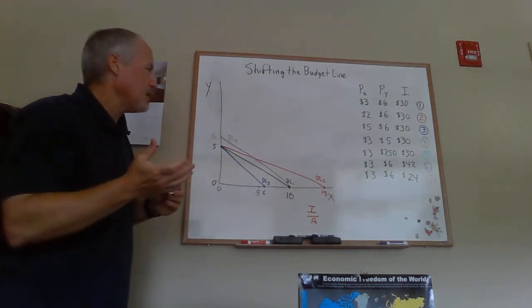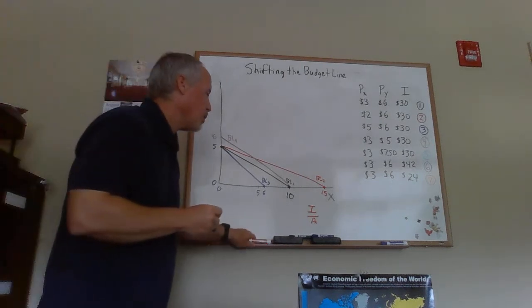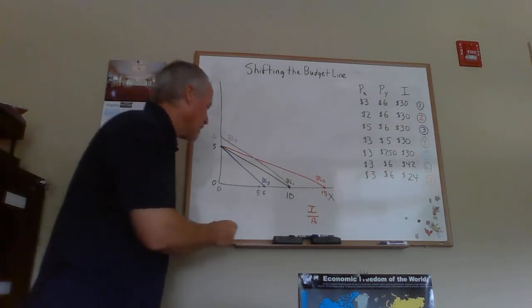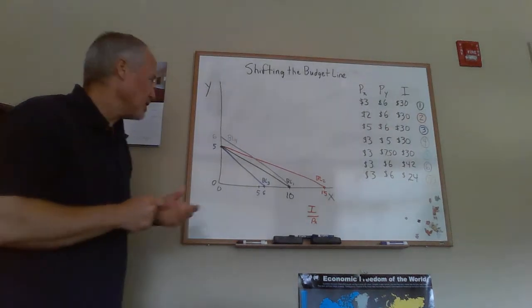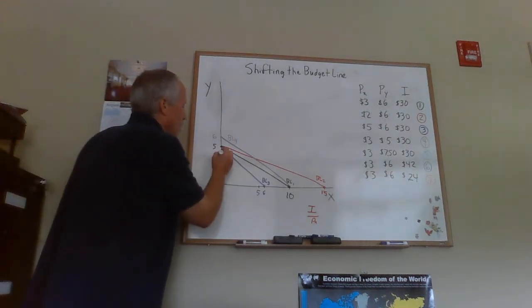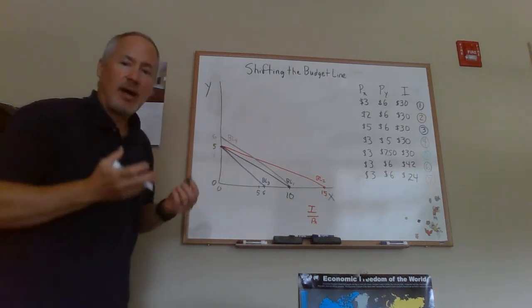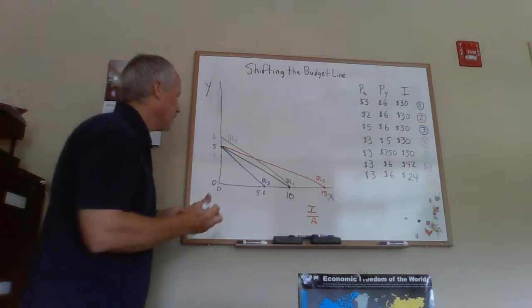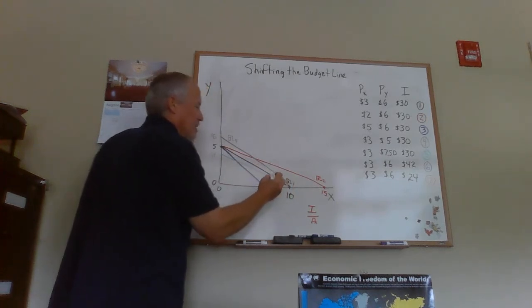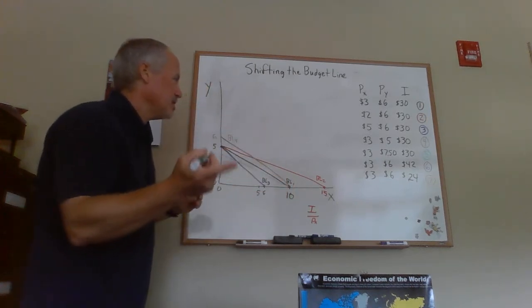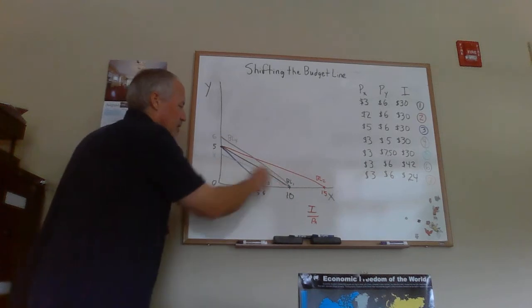For budget line number five, we raised the price of Y to $7.50. I picked that because 30 divided by 7.50 is going to be 4. As the price of Y goes up, a person will now be able to buy 4 units of Y if they spend all their money on Y. The price of X is $3, so we still have the 10 intercept, and here's BL5.